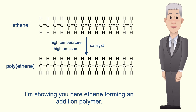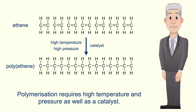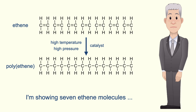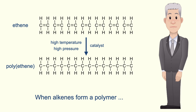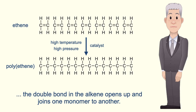I'm showing you here ethene forming an addition polymer. Polymerization requires high temperature and pressure, as well as a catalyst. I'm showing seven ethene molecules, but in reality thousands of ethene molecules would form a polymer. When alkenes form a polymer, the double bond in the alkene opens up and joins one monomer to another.